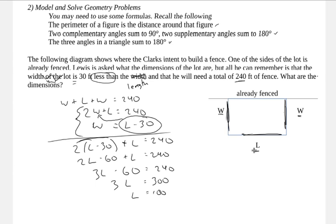Of course, that's only the length. I need to figure out the width, and I already have that equation right here. The width is l minus 30, so that's 100 minus 30, which is 70. So the length is, what did I say, 100? What are the units here? Feet. And the width is 70 feet.